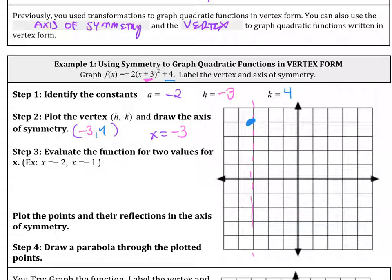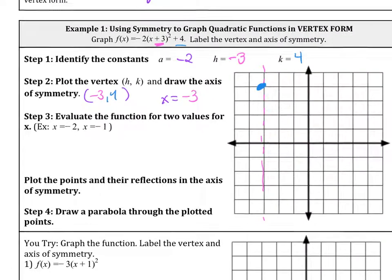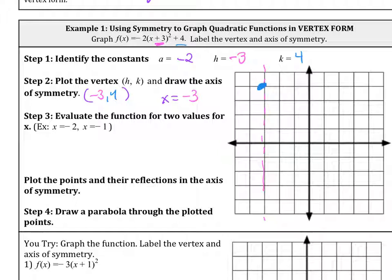Then we can evaluate the function for two values. This is just one of the ways to do it, depending on what your teacher wants you to do. You pick numbers that are close to the vertex. If we have the number negative 3 here, we can choose negative 2 and then negative 1, which is what I put here.